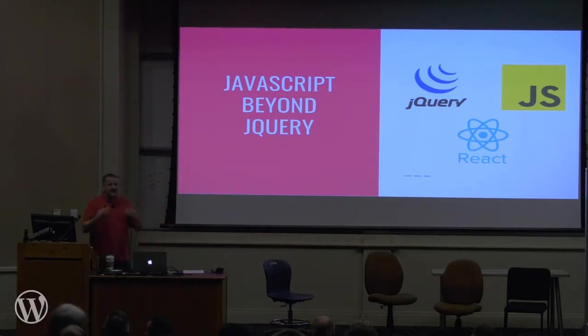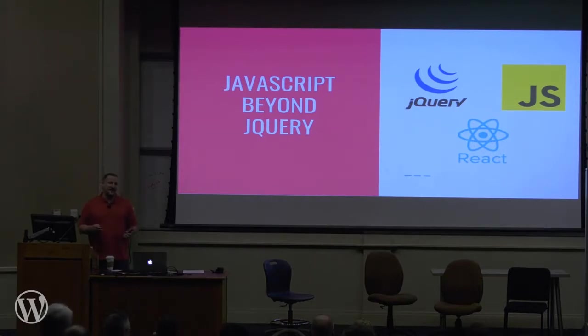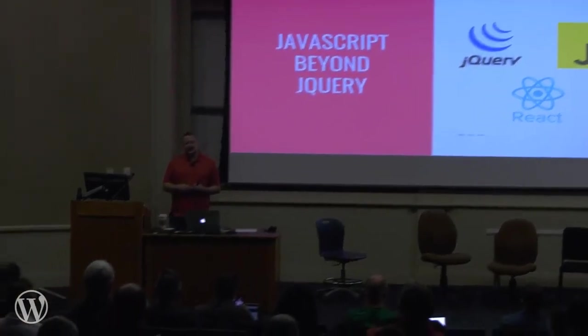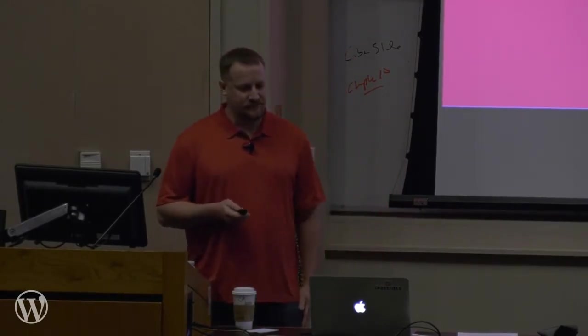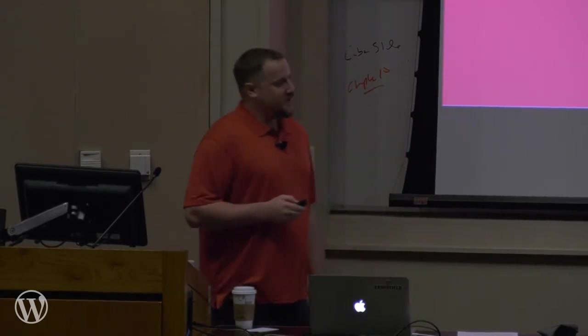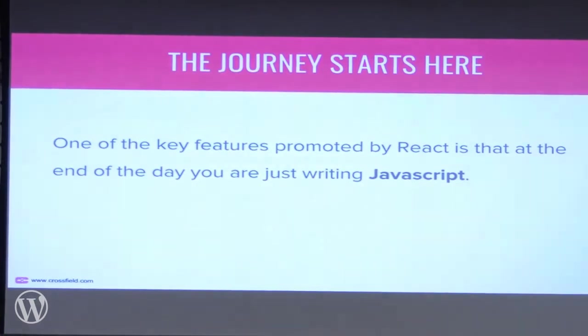I'm going to talk about myself once at the very beginning, and then the rest of the talks I'll just assume you know who I am. My name is Bobby Bryant. I work at Crossfield Digital, an agency with offices in Miami and New York City. We do Rails development, WordPress development, and mobile apps. So: JavaScript beyond jQuery — the journey starts here.